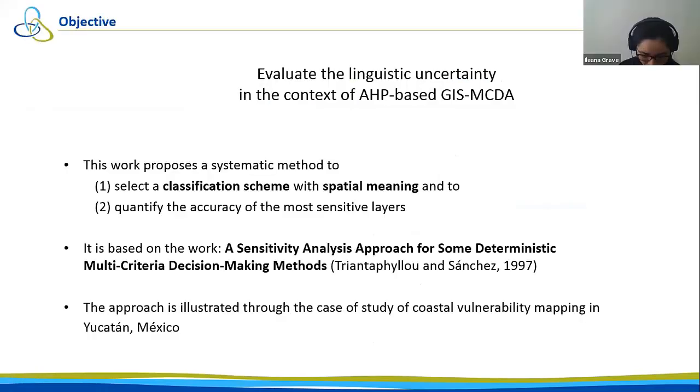The main objective of this work is to evaluate the linguistic uncertainty in the context of AHP-based GIS MCDA. This work proposes a systematic method to select a classification scheme with special meaning and to quantify the accuracy of the most sensitive layers.